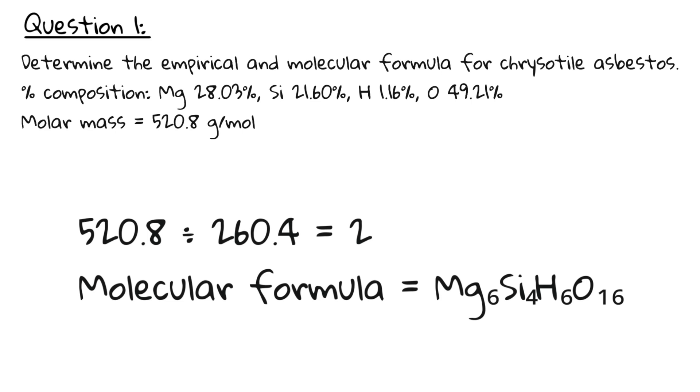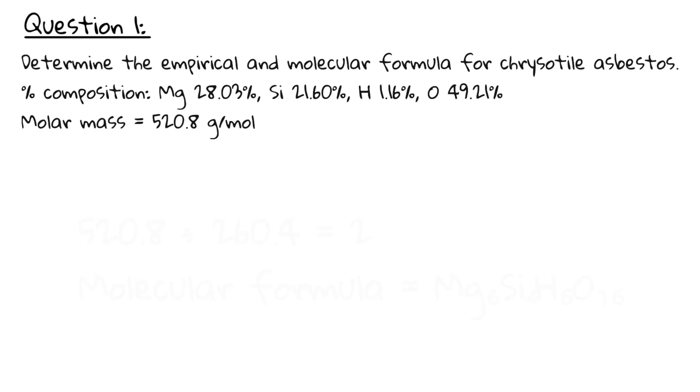Now we divide the molar mass by the empirical mass. As the ratio is a 2, we simply multiply our empirical formula by 2 to obtain Mg6, Si4, H6, O16.